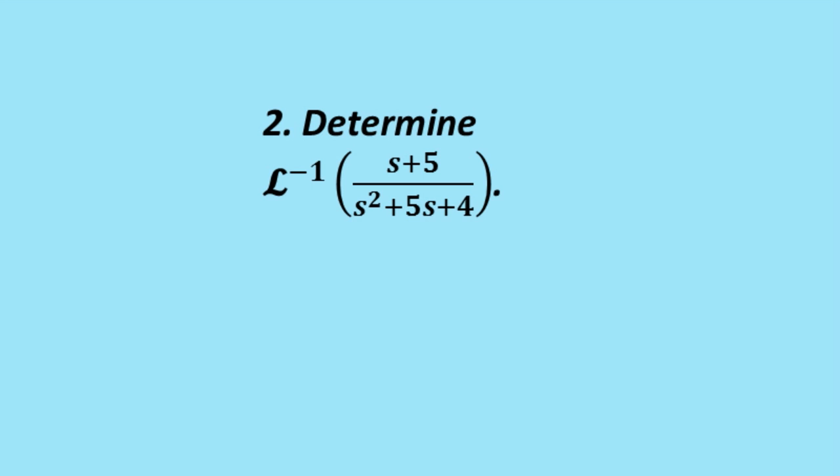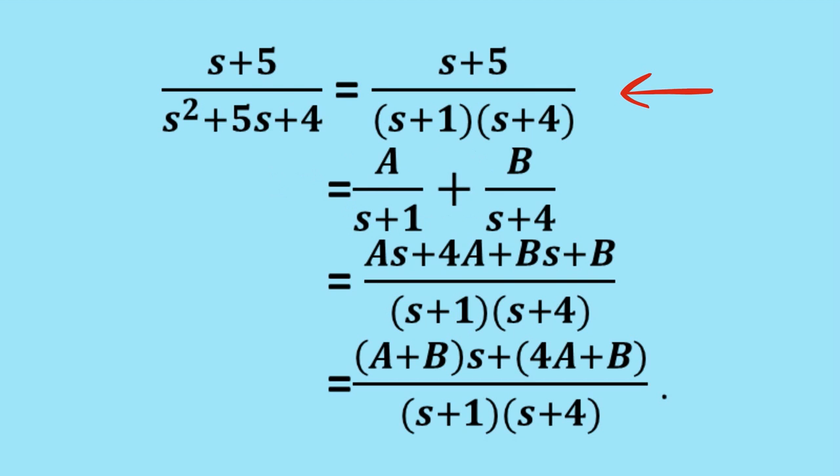If we return to the problem we're asked to solve, we can see that we can't just use the Laplace transform tables to work out the inverse here. But what we can do is recognize that this fraction can be expressed with the denominator as the product of s plus 1 and s plus 4. Now we can use the techniques of partial fractions. The basic idea is that we express the fraction as a on s plus 1 plus b on s plus 4. We want to solve for a and b.